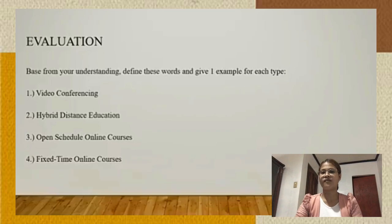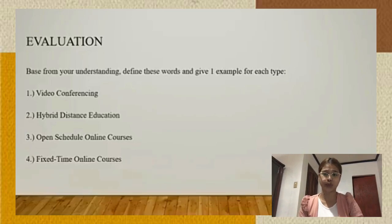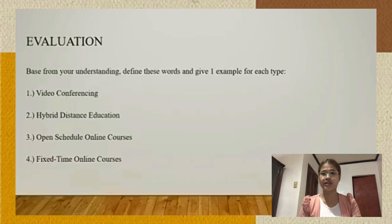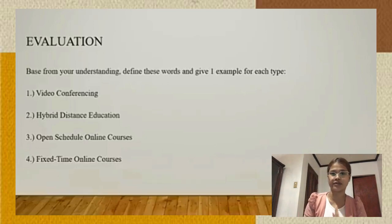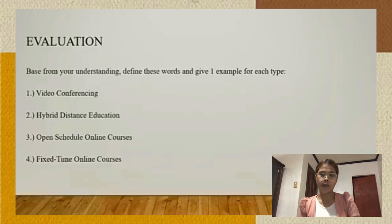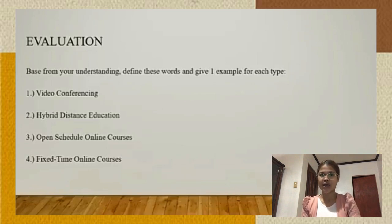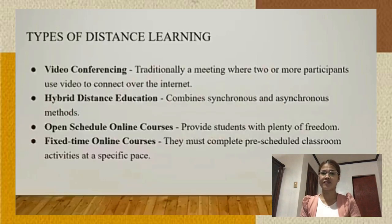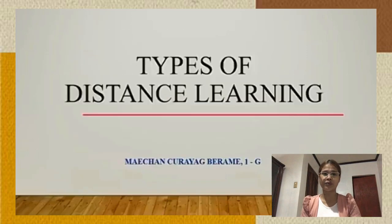Now for the evaluation. Based on your understanding, define these words and give one example for each type: first, video conferencing; second, hybrid distance education; then open schedule online courses; and lastly, fixed-time online courses. That's all everyone — I hope you learned something. Thanks for listening.